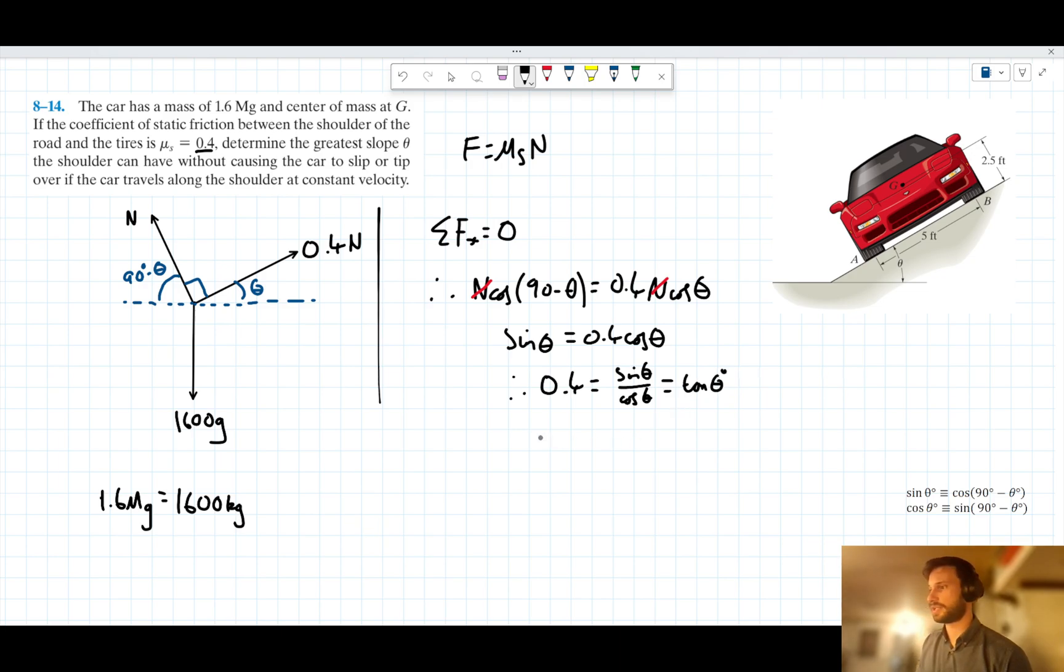So we can say, therefore, theta is equal to the inverse tan of 0.4, which, when I bung in my calculator, gives me a value of 21.8 degrees.